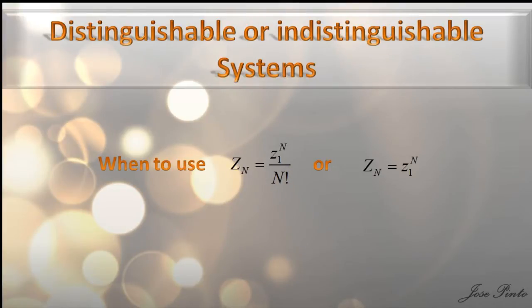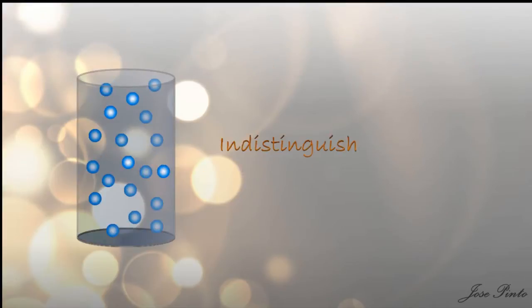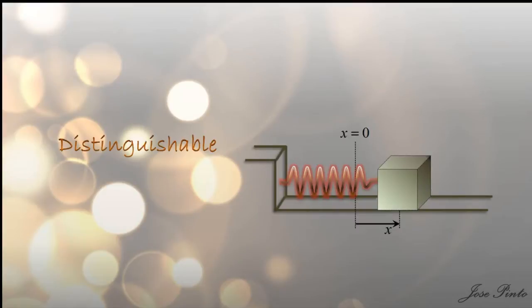So we need to have a solid definition of what distinguishable means. When we look at the case of the ideal gas, we know that this is an indistinguishable system. And when we talk about the system of identical harmonic oscillators, we know that this is distinguishable.